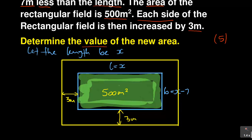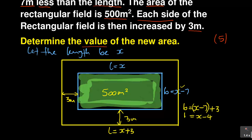Now, if the original length was X, the new length will be equal to X plus three because we've increased by three. And the new breadth will be equal to X minus seven, but remember it's plus three now. So it's X minus seven plus three, which we can simplify to X minus four. So that is the new breadth.